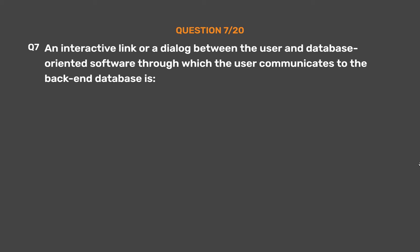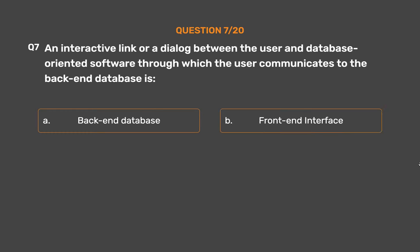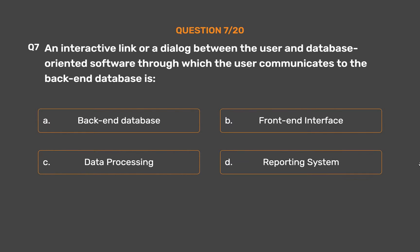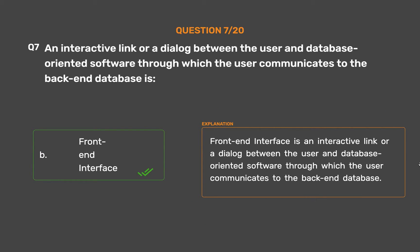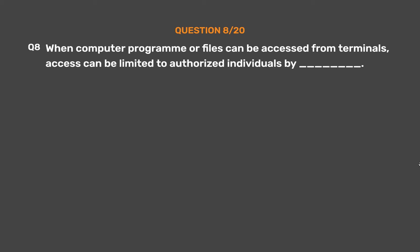Question number 7. An interactive link or a dialogue between the user and database-oriented software through which the user communicates to the back-end database is: Option A: Back-end database. Option B: Front-end interface. Option C: Data processing. Option D: Reporting system. The correct answer is Option B — Front-end interface. Front-end interface is an interactive link or a dialogue between the user and database-oriented software through which the user communicates to the back-end database.